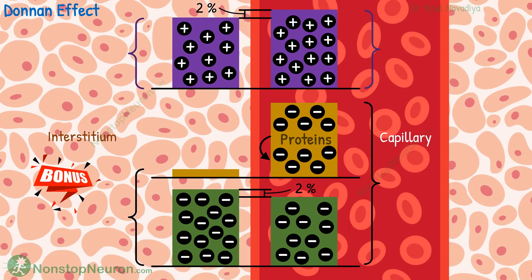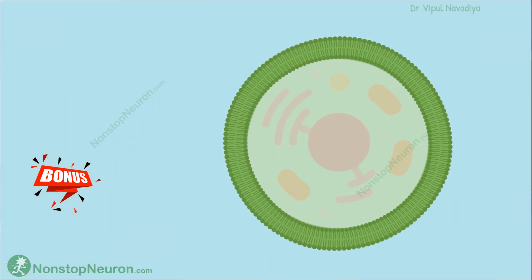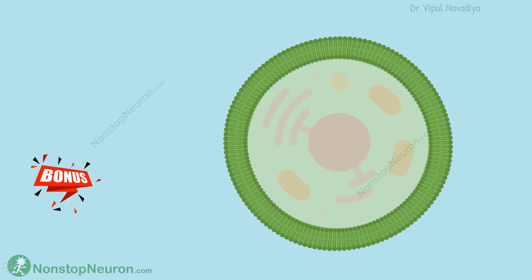Now, for sticking with me until the end, here is a bonus point for you. See what we saw thus far was the Donnan effect across the capillary wall. But a similar Donnan effect is also seen across the cell membrane. This is because the cells also have negatively charged proteins that cannot exit the cell.